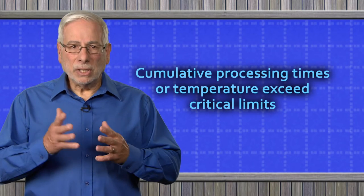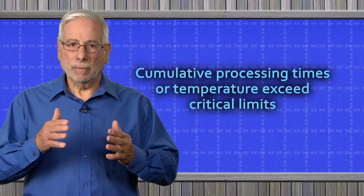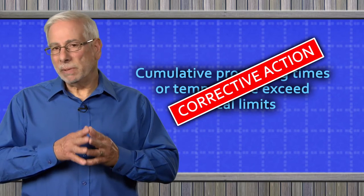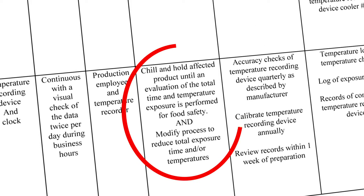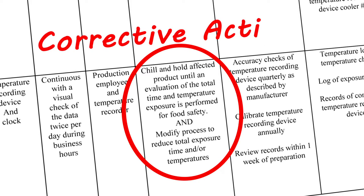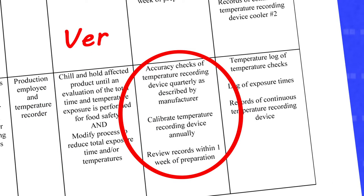If the ambient air temperature doesn't exceed 70 degrees, then neither will the internal product temperature. However, if the cumulative processing times and/or temperatures exceed the critical limits, then a corrective action needs to be taken. The corrective action is to chill, hold, and evaluate the product for safety to ensure unsafe product doesn't reach the consumer, and to modify the process to correct the cause of the critical limit deviation.